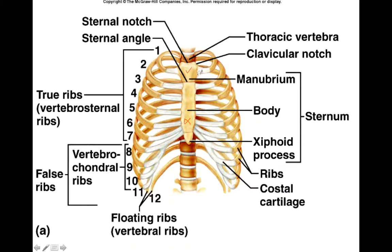The ribs are attached to the sternum through the costal cartilage, and the ribs are numbered superior to inferior. Ribs one through seven are attached to the sternum through their own costal cartilage — those are called true ribs. Ribs eight, nine, and ten are called false ribs because their costal cartilage attaches to rib seven's costal cartilage, so they don't have a direct connection. Ribs eleven and twelve are called floating ribs because they have no anterior articulation — they don't attach to the sternum at all.